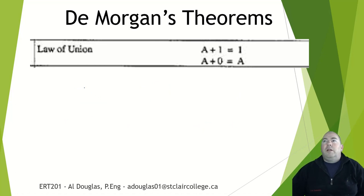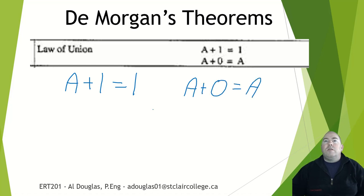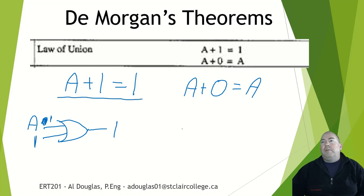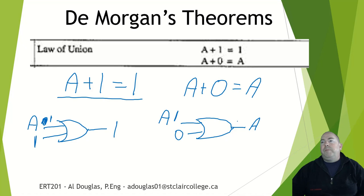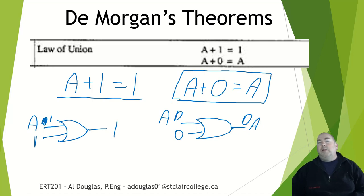The law of union is the same thing but with ORs. A ORed with a 1 always gives a 1 — it doesn't matter what the input is, 0 OR 1 and 1 OR 1 both give 1. A ORed with a 0 gives back A — if A is a 1 you get a 1, if A is a 0 you get a 0, so the output always equals the input. That is the law of union.